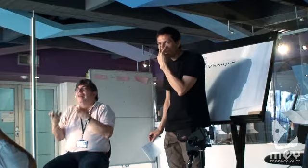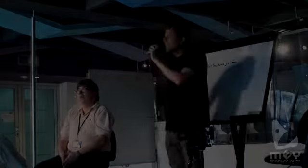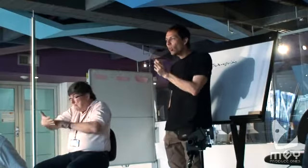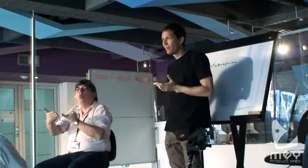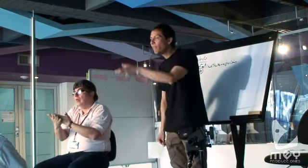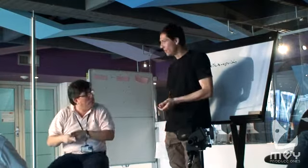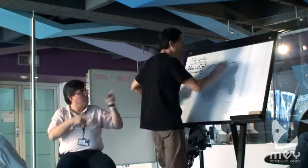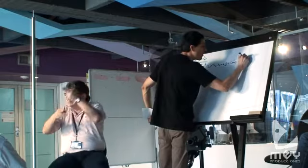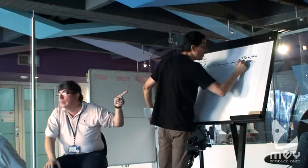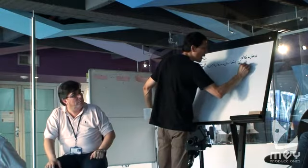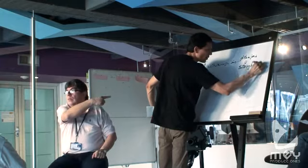La propuesta estética, es decir, ¿cómo quieren que se vea el corto? Si no lo hacen por escrito el guión, lo pueden hacer dibujado, lo pueden proponer con fotografías, y a eso le llamaremos un storyboard. El guión en dibujos es lo que llamaremos un storyboard.